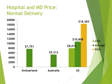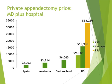For hospitals and physician pricing for normal delivery, Switzerland pays about $7,700 and Australia about $5,300. In the United States, there are again three different pricing tiers: about $8,000, $10,000, almost $11,000, and right over $18,000 for a normal delivery. For a private appendectomy, Spain pays about $2,000, Australia $38,000, Switzerland $6,000, while in the U.S. it can go all the way up to $33,000 depending on negotiations. Most of us fall in the 95th percentile of pricing.